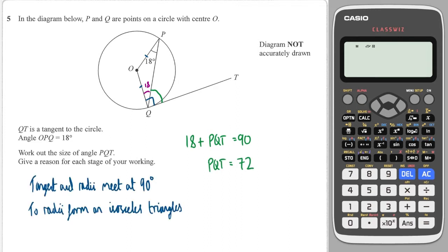You need to state each stage of your working. The reasons to write are: tangent and radius meet at 90°, and two radii form an isosceles triangle.